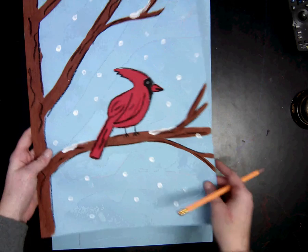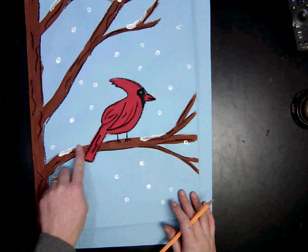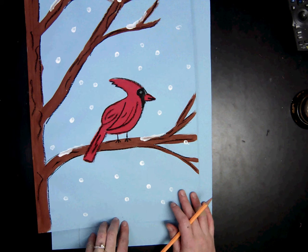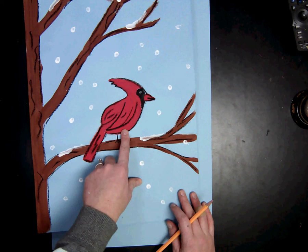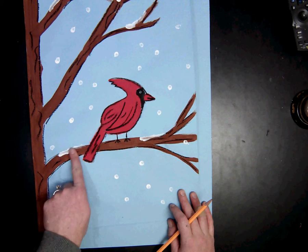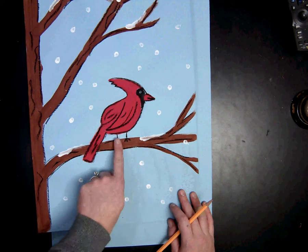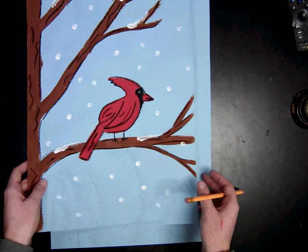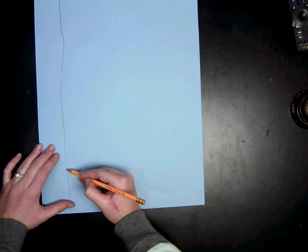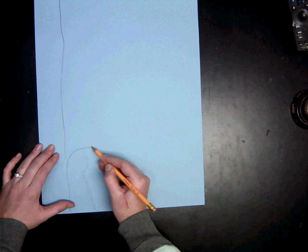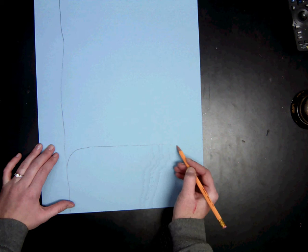Next, I am going to be drawing the branch that is the closest to the ground, the furthest down on my paper, and the one where the cardinal will be sitting. Notice that this branch is pretty flat, so that the cardinal can sit on it. So I am going to start near the bottom. I am going to have it kind of go up a little bit, and then I am going to have it flatten out.